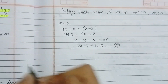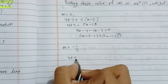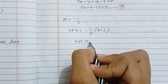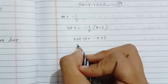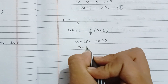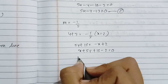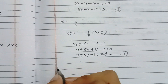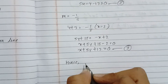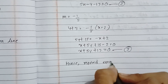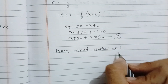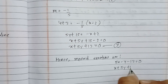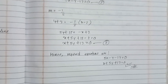For m equals minus 1 by 5: y plus 3 equals minus 1 by 5 times (x minus 2), multiplying through by 5 gives 5y plus 15 equals minus x plus 2, so x plus 5y plus 15 minus 2 equals 0, that is x plus 5y plus 13 equals 0. This is equation number 3. Therefore, the required equations are 5x minus y minus 13 equals 0 and x plus 5y plus 13 equals 0.